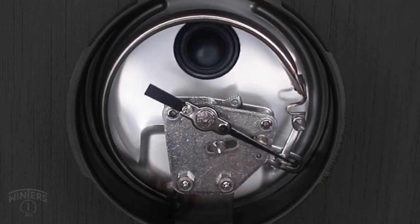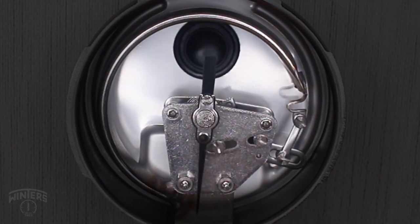The C-shaped Bourdon tube is found in gauges measuring pressures from 15 psi up to 1,000 psi.